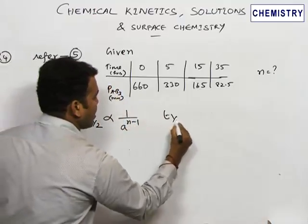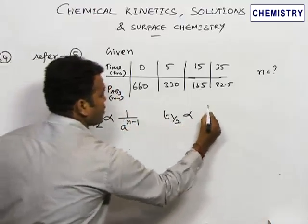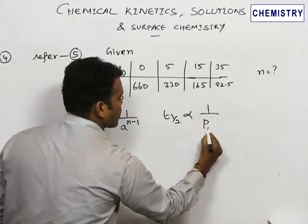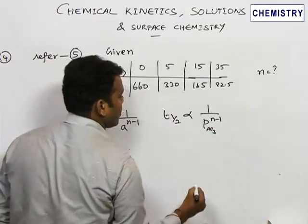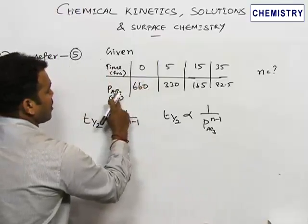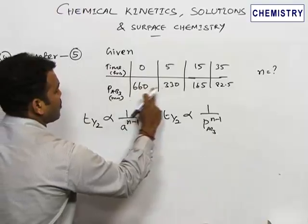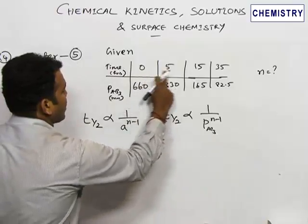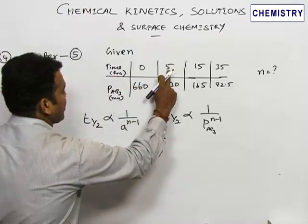So we can directly relate this equation as t½ is inversely proportional to partial pressure of AB3 power n minus 1. Now see, the initial pressure of AB3 is 660. So now this becomes 330, that means the time required for this conversion will be half-life period.